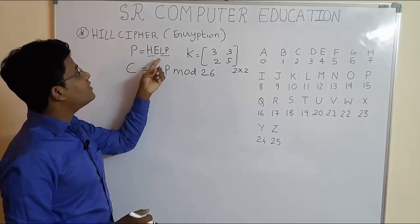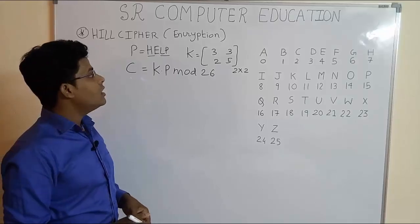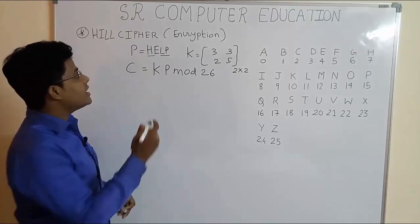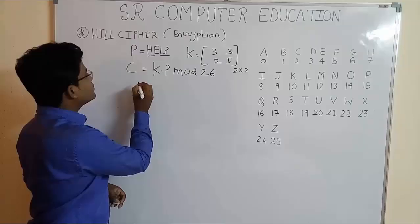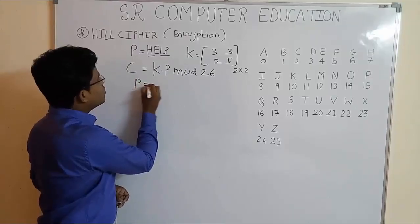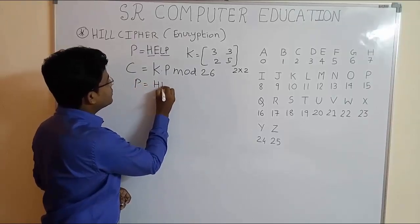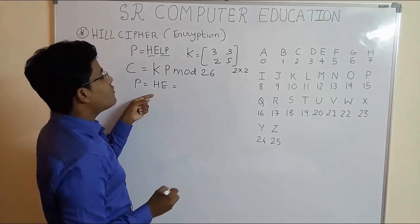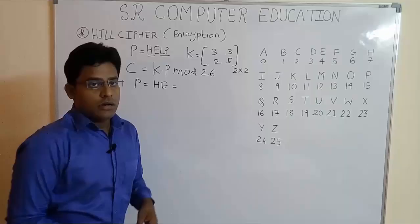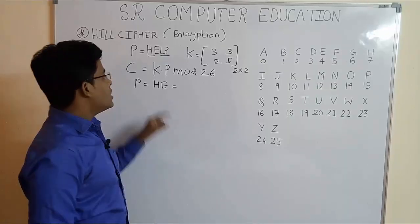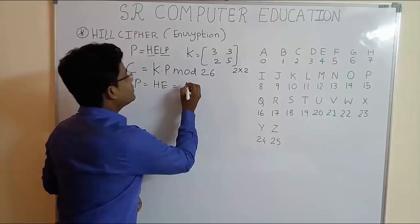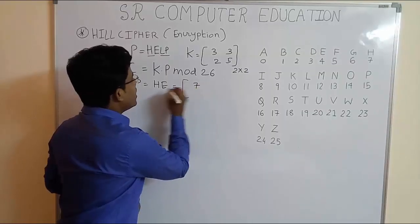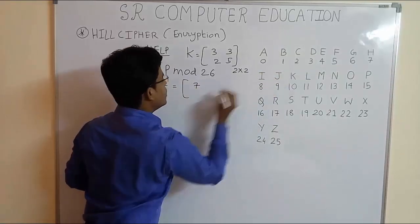So first we have to take H, E, L and then the remaining. So now let's take the pair P equal to HE. Now convert this HE into a matrix form. For that we have to look the tables that we already know from our previous videos. H is 7 and E is 4 here.